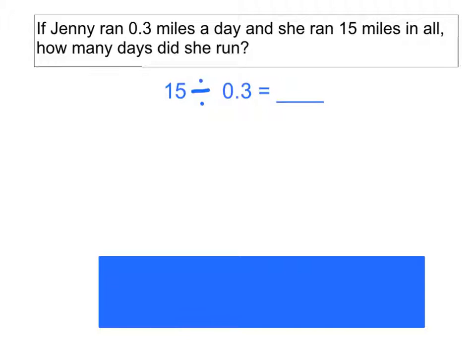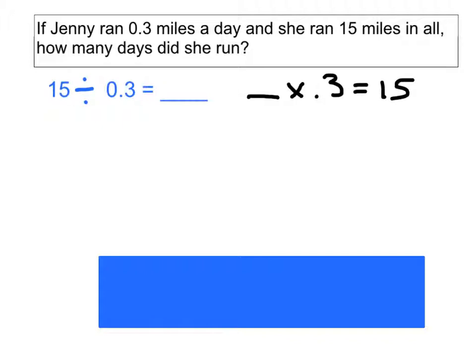Whenever I do division problems using decimals, I always like to turn it into a missing factor problem. So I'm going to make the same equation, but it's going to be using multiplication. So it'll be the blank times 0.3 equals 15. I do that because sometimes it helps me to think about multiplication. Sometimes that's easier to think about than division. So let's do some reasoning about this problem.